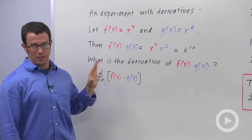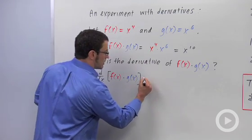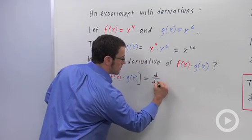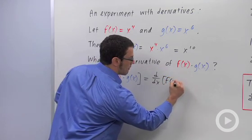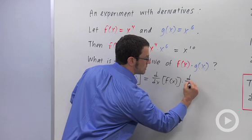Now, what's the derivative of this product of the two functions? Well, you might expect the derivative of the product to be the product of the derivatives. The derivative with respect to x of f of x times the derivative with respect to x of g of x.